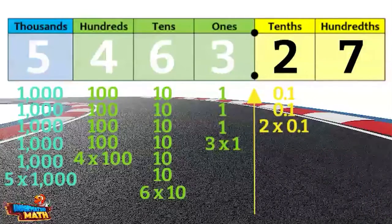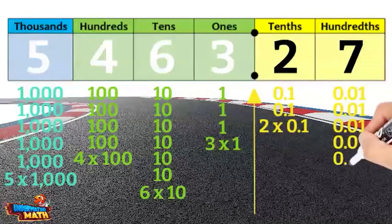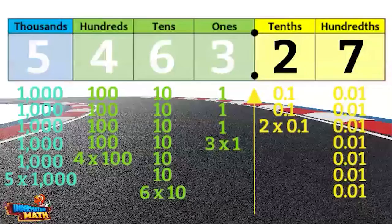Let's try the hundredths place. There are seven hundredths. How do you think we would write this as a product? If you said seven times one hundredth, you would be right.